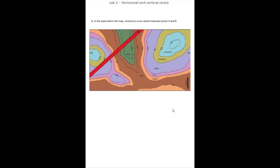The next question asks to, in the space below, draw a cross-section between A and B. So we want to show the subsurface geology between those two points, showing the topography and the rock types that we'd find at depth.